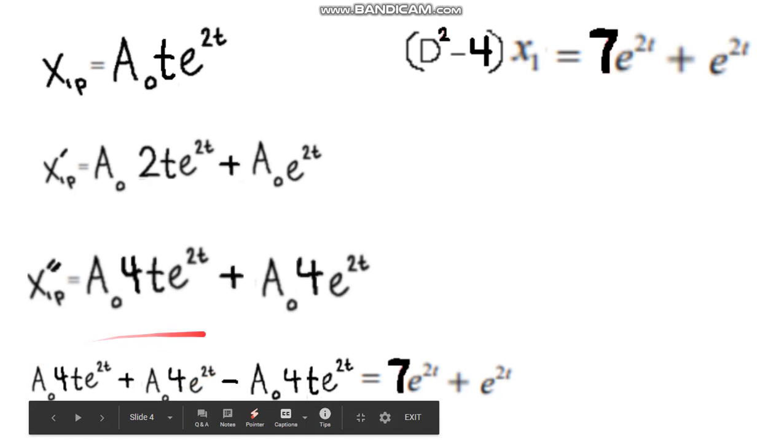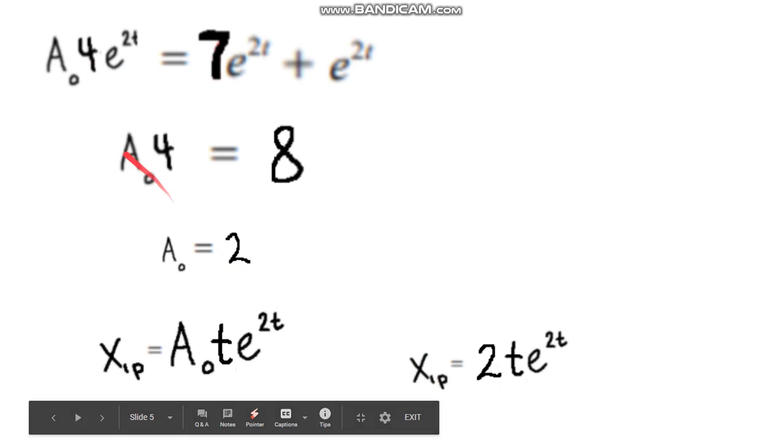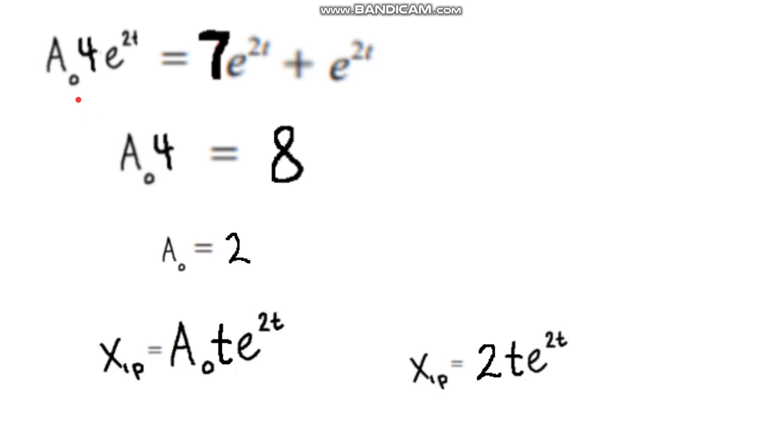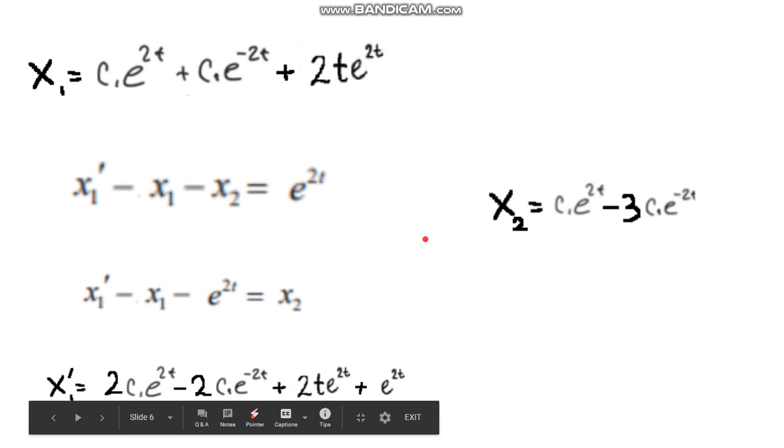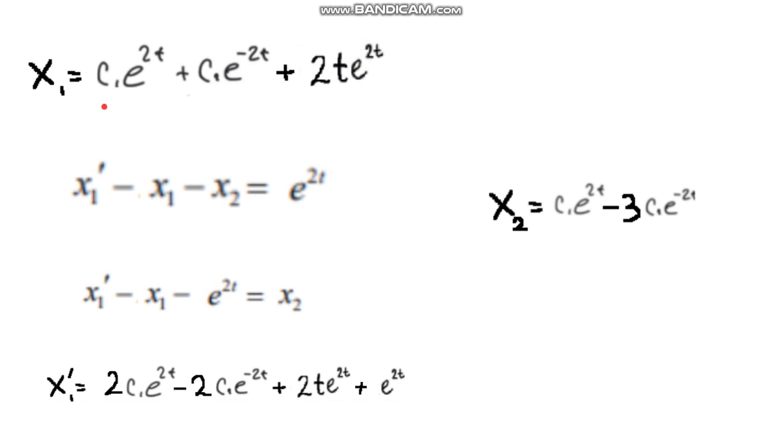and this is what we're going to get. It's right here. And as you can see, we have some cancellations. We're left with this. Take out e^(2t). We get A_0 times 4 is equal to 8. Then we get A_0 is equal to 2. Plug this back into our x1 particular solution. And we get 2te^(2t). Now, we combine this with our other solution to get our general solution. Right?